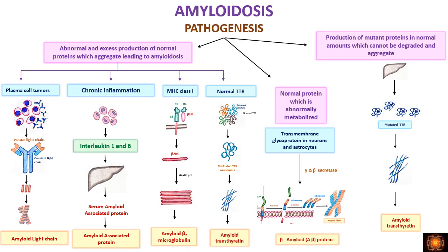For normal proteins that are excessively produced: in plasma cell tumors, tumor plasma cells produce immunoglobulin light chains which aggregate and give rise to amyloid light chain protein. The second condition is chronic inflammation, where chronic inflammatory cells like macrophages and monocytes produce cytokines.